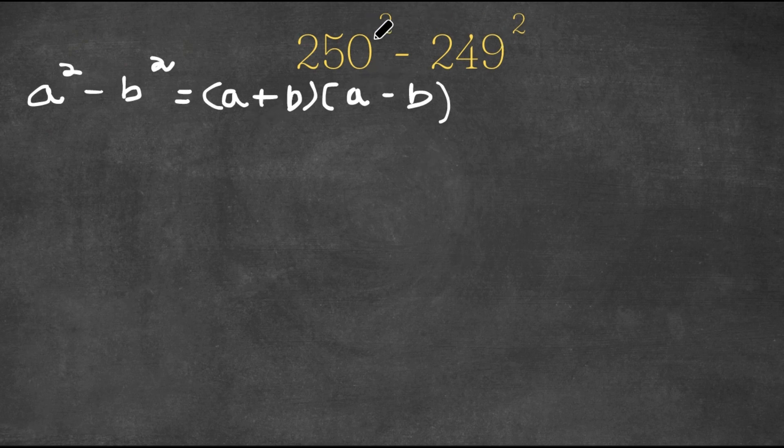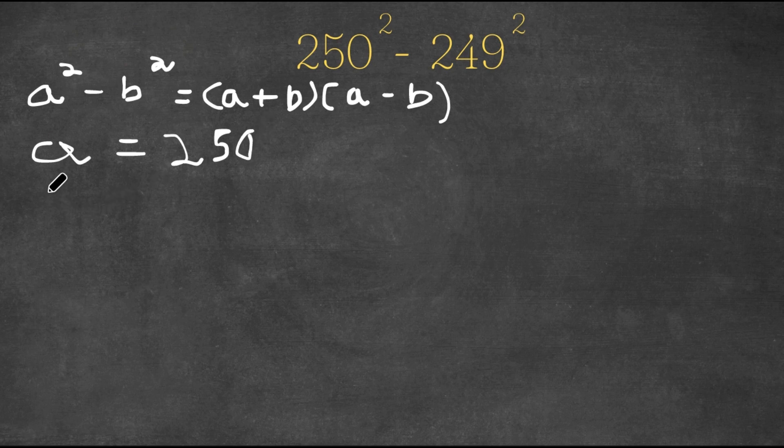So as you can see here, we have 250 squared minus 249 squared, and all we have to do is simply plug in these values and solve. So a, this is going to be 250, and b, it's going to be 249.